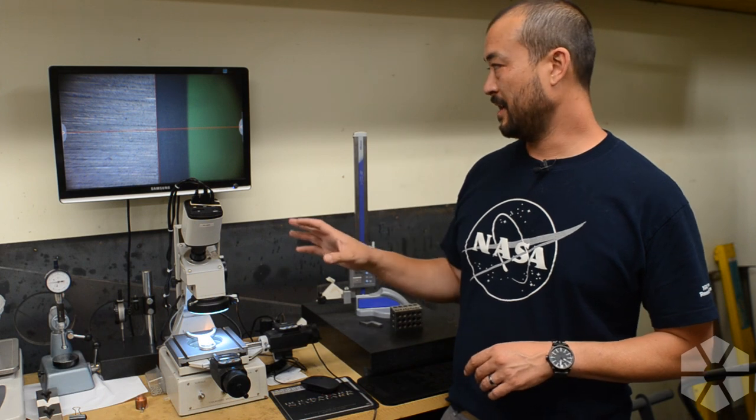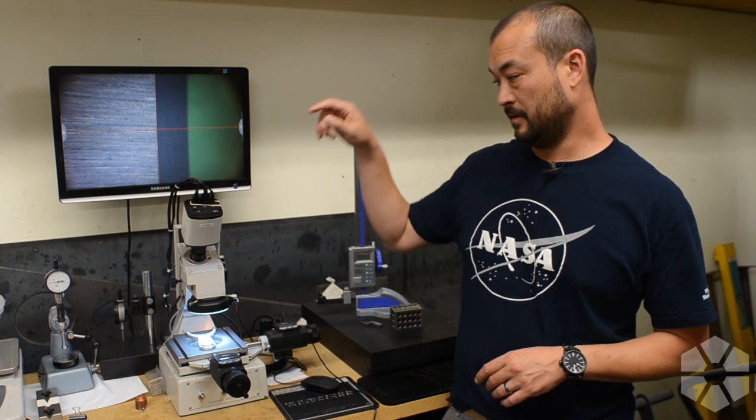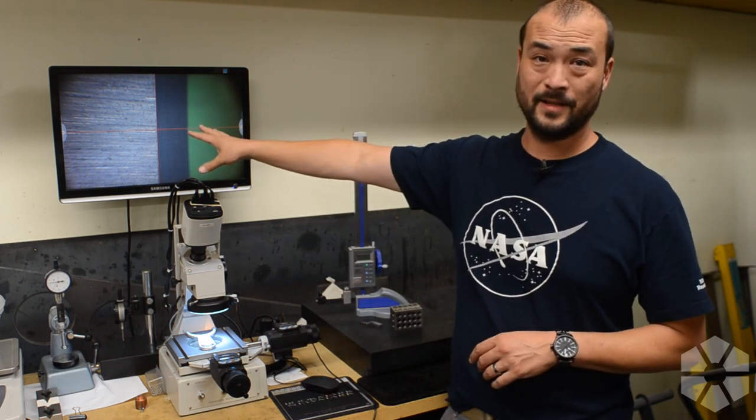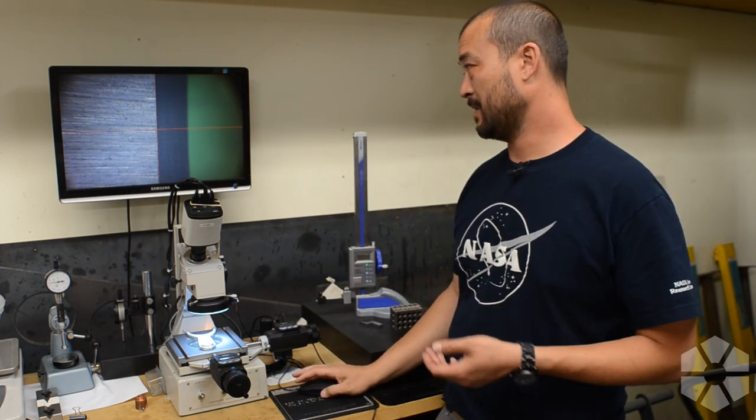The microscope camera is good. It is not as good as just looking directly through the eyepiece. And so you can see these red lines on the screen and these are actually projected by the software and the software is actually kind of cool.